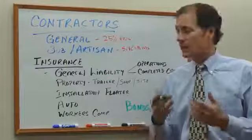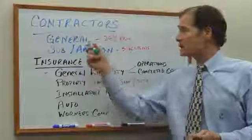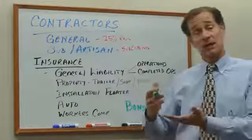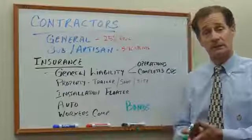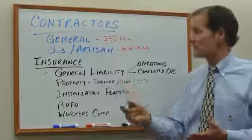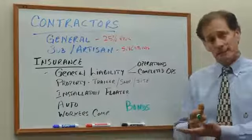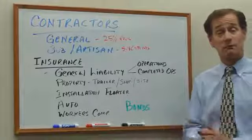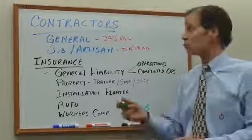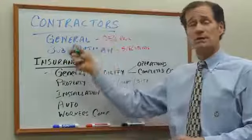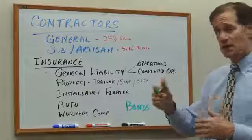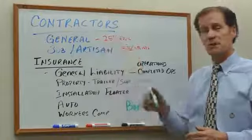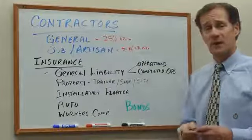Why is that? It all comes down to control. A general contractor is relying on other companies to get a lot of the work done on a given job site, and because of that lessening of control, the risk of something going wrong is greater. There are ways that we can control that additional cost that I'll get to at the very end, but that is, broadly speaking, how we break down contractors.